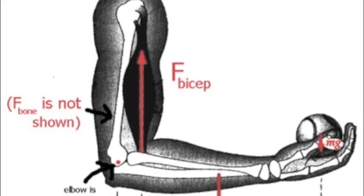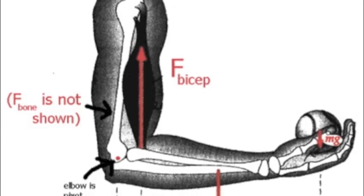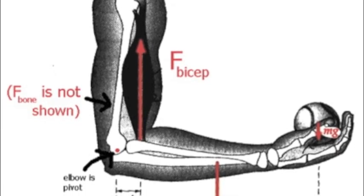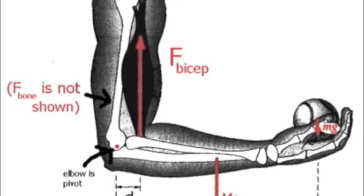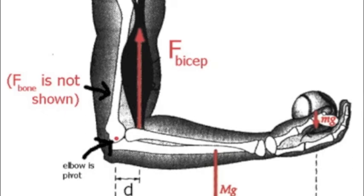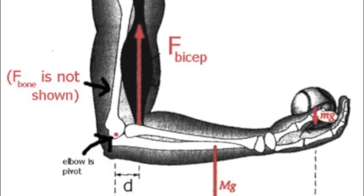Muscles also come in pairs, such as biceps and triceps, and are known as either agonist, who is doing the work, or antagonist, who is opposing the force. These can change based on which direction the force is being applied. As well, friction in the joints causes very low efficiency.